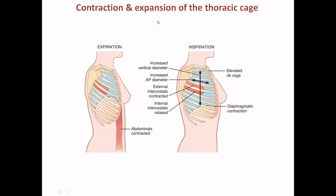For the contraction and expansion of the thoracic cage: the lung is suspended in the pleural cavity. It is not attached to any portion of the thorax but is suspended in the pleural cavity and surrounded by fluids. During expiration, the abdominal muscles contract so that the space in the thorax is reduced and whatever air is present is expelled out.